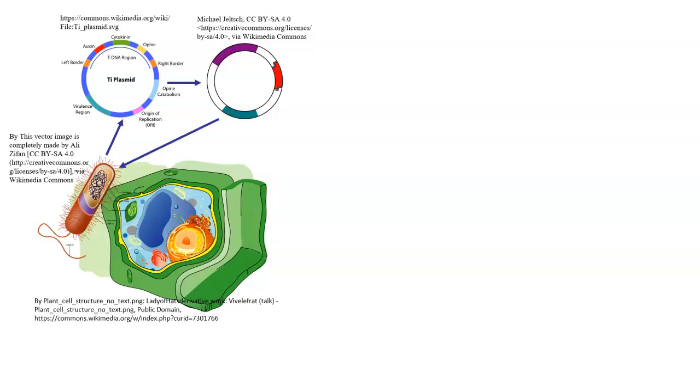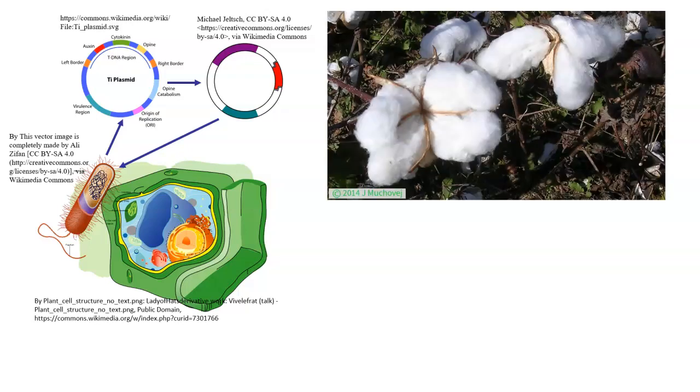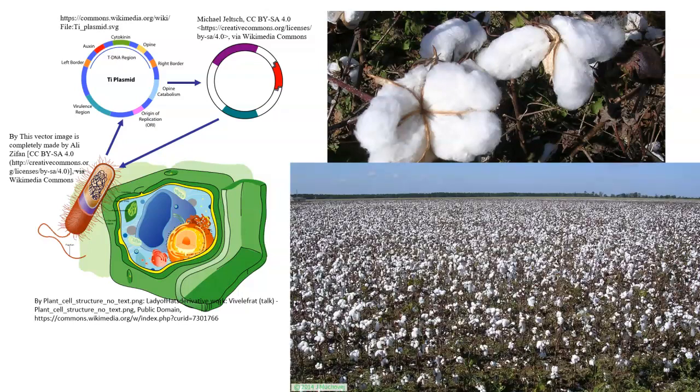We would call this plant transgenic. Whatever characteristic was on that gene now becomes part of that plant. This is the way they modified cotton in order to be able to have cotton less susceptible to things like the boll weevil. And this is the way they have tried to modify plants to do things like put oils and put vitamins in it.